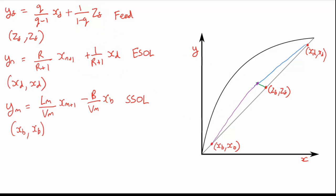We can now use our operating lines to find how many equilibrium stages we need by stepping off stages, starting from the feed point. We step up towards our distillate and step down towards our bottom product. In this case, we need four equilibrium stages for the separation.